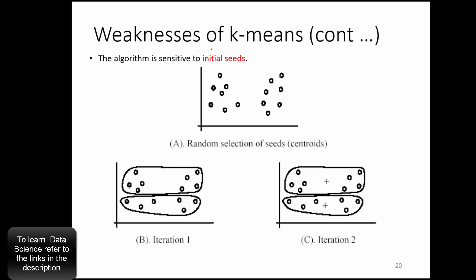The algorithm is very sensitive to initial seeds. That's another weakness of K-Means. So initial seeds means when the algorithm first chooses the initial points. That will decide how the clustering will happen. Here is a typical example. We are taking the same example, right?